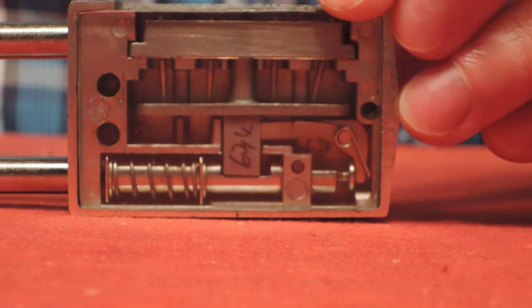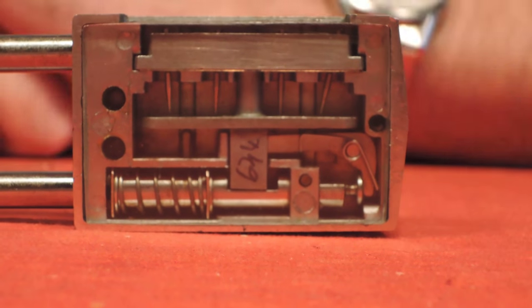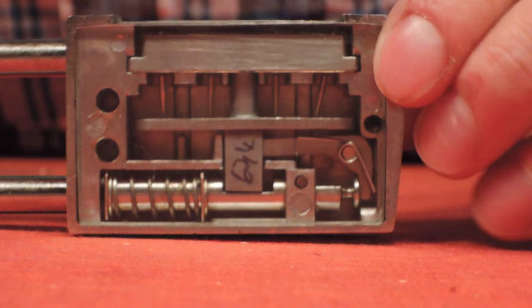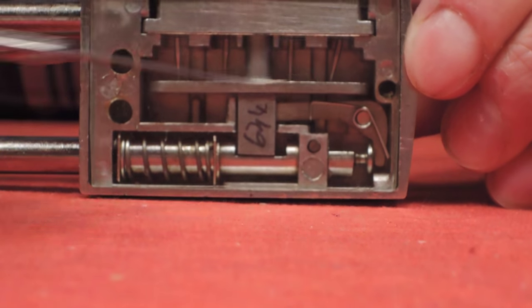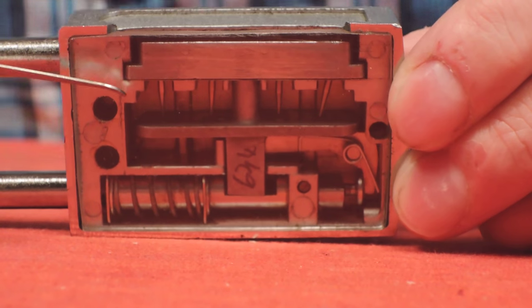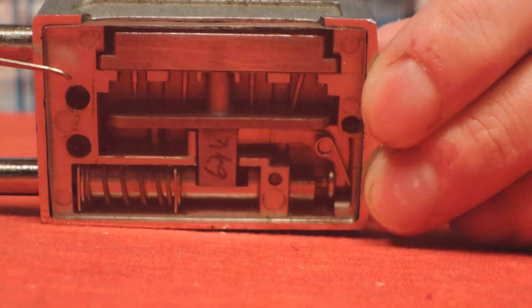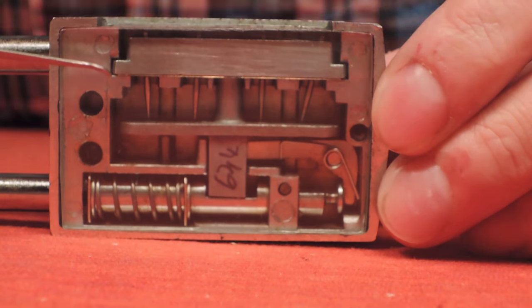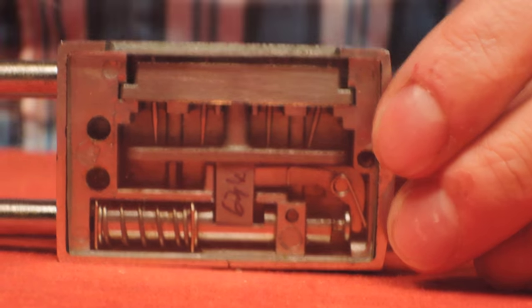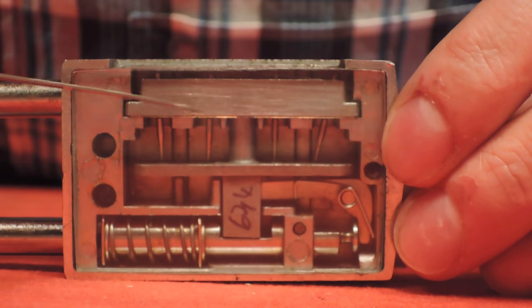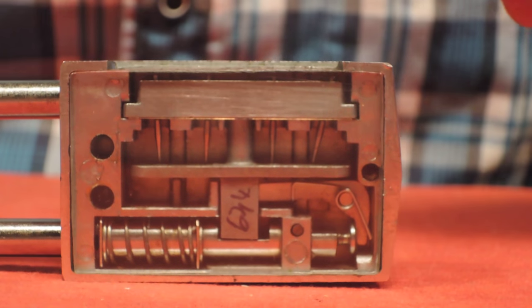To show you the inner workings of the lock, what we have done is we have taken the plate off so you can see the insides. As you can see, there's a metal plate and this plate has small holes.